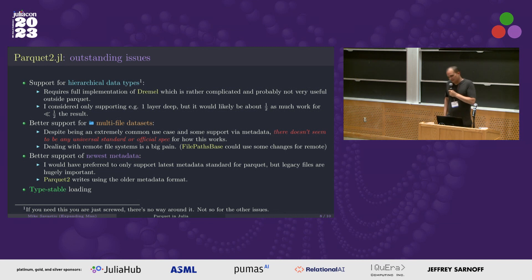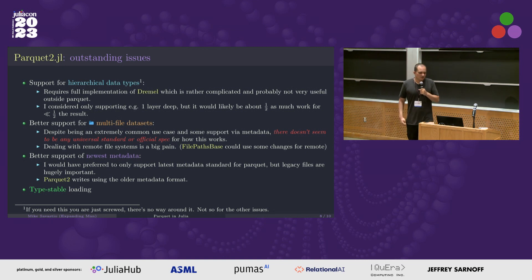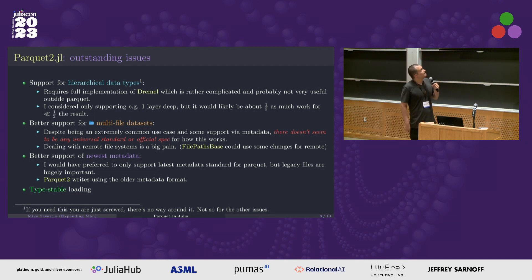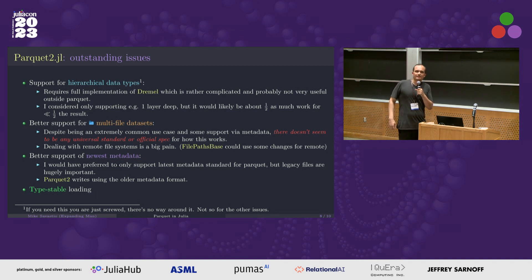Outstanding issues and things I'd like to do: the big one is that I don't support hierarchical data types, which Parquet does support, but the implementation is very complicated — it essentially involves a full implementation of something called Dremel. The problem is that if you need it right now in Julia, you're more or less stuck and have to use PythonCall or something, because there's nothing that will read them. The vast majority of Parquet files might not have it, but it would be nice to have recourse if you needed it.